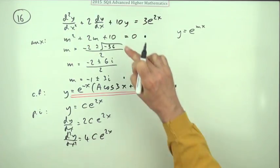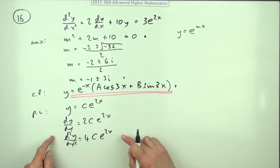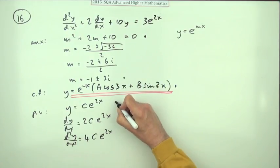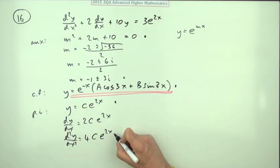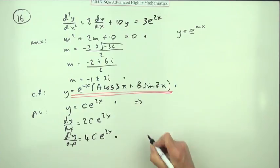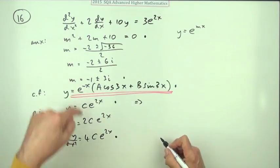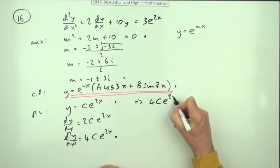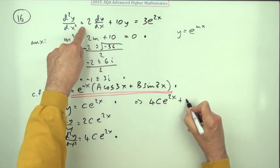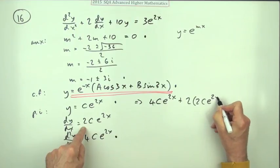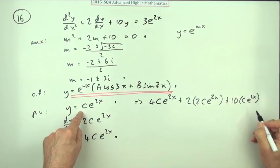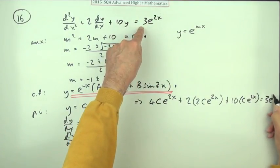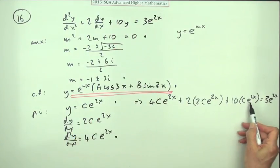And then feed them into that. There's a couple of marks here: one for trying a particular integral of this form and one for having these two derivatives. Feeding that in would give you 4c e to the 2x plus 2c e to the 2x plus 10c e to the 2x, which should come to 3e to the 2x.